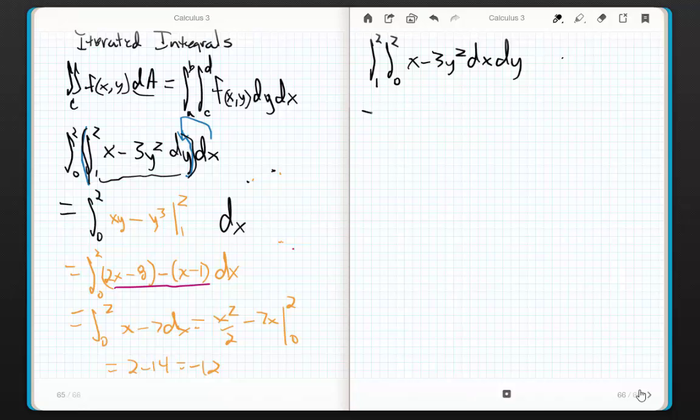So what are we going to do? This is going to equal the integral from 1 to 2 of. Now I'm dealing with x. So this guy is nothing but a constant. So I'm going to get x² halves minus 3xy². The antiderivative of a constant dx is just the constant times x. This is evaluated from 0 to 2, and then I slap my dy.